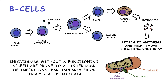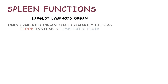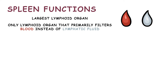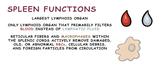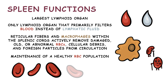Individuals without a functioning spleen are prone to a higher risk of infections, particularly from encapsulated bacteria. Even though the spleen is the largest lymphoid organ, it is also the only lymphoid organ that primarily filters blood instead of lymphatic fluid. As blood passes through the spleen, the reticular fibers and macrophages within the splenic cords actively remove damaged, old, or abnormal red blood cells, cellular debris, and foreign particles from circulation.